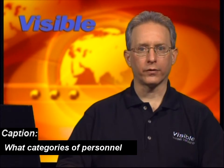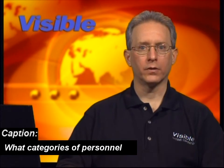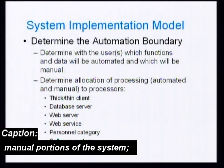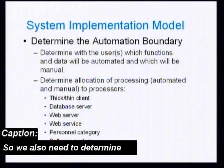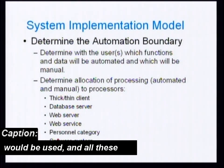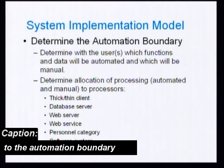What categories of personnel would be required for the manual portions of the system? We also need to determine what kind of software systems and perhaps a package would be used. All of these decisions are integral to the automation boundary decision-making process.